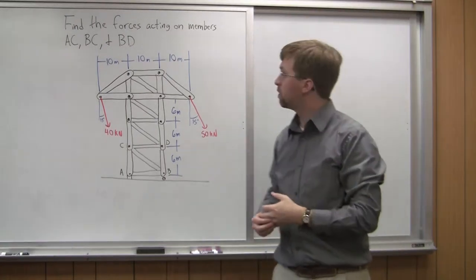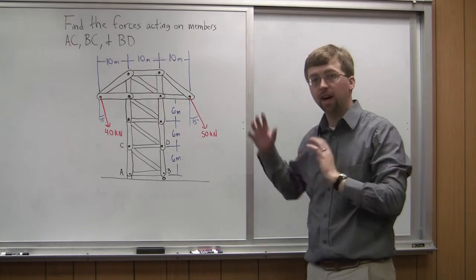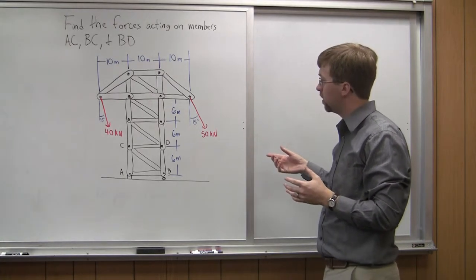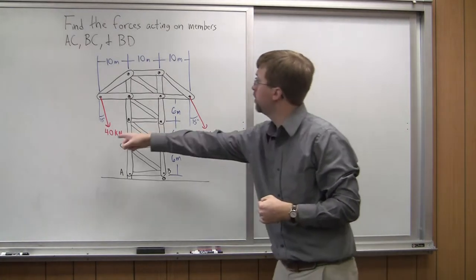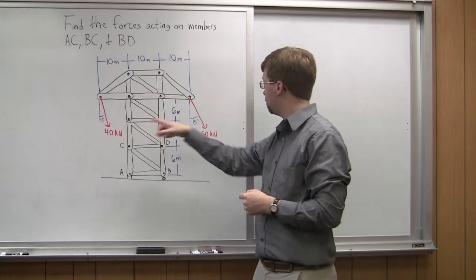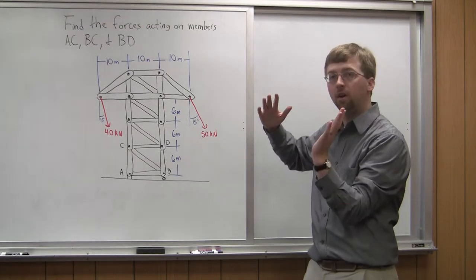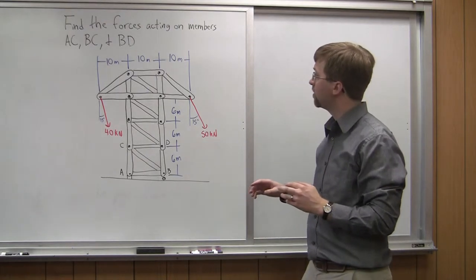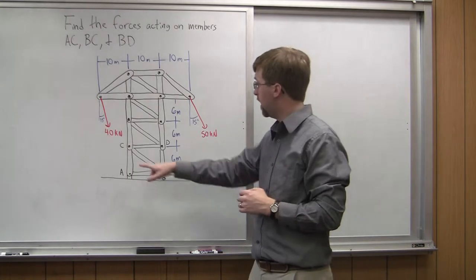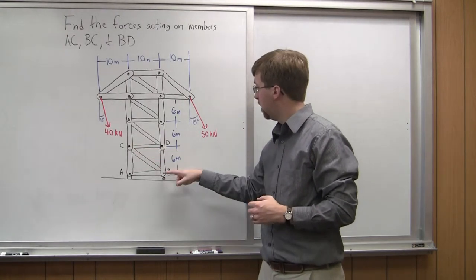Hello. For this worked example, we've got a tower — it's kind of like a high-tension tower. It's going to be supporting two loads, 40 kilonewtons and 50 kilonewtons, both 15 degrees off of vertical. We're asked to find the forces acting on members AC, BC, and BD.